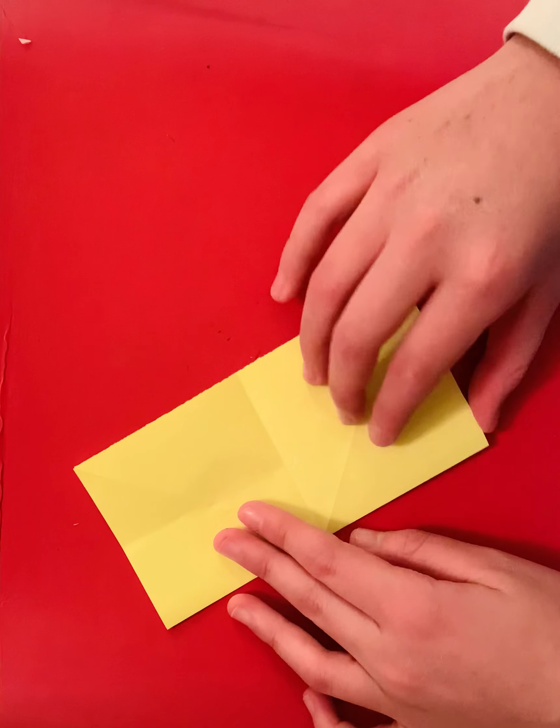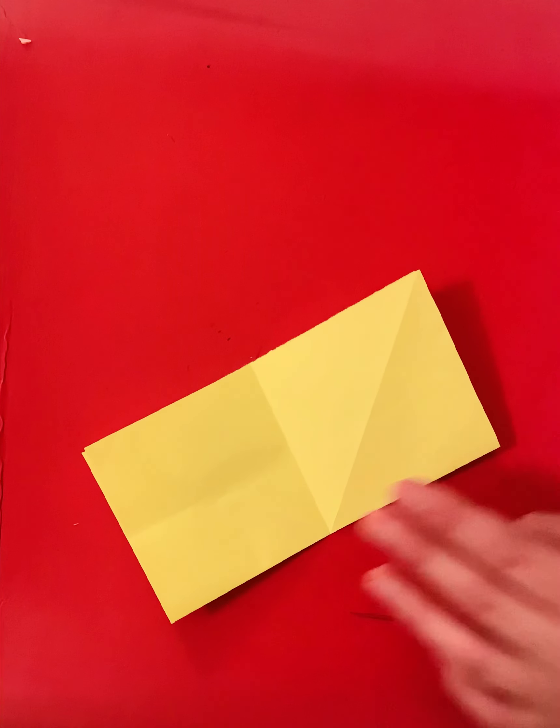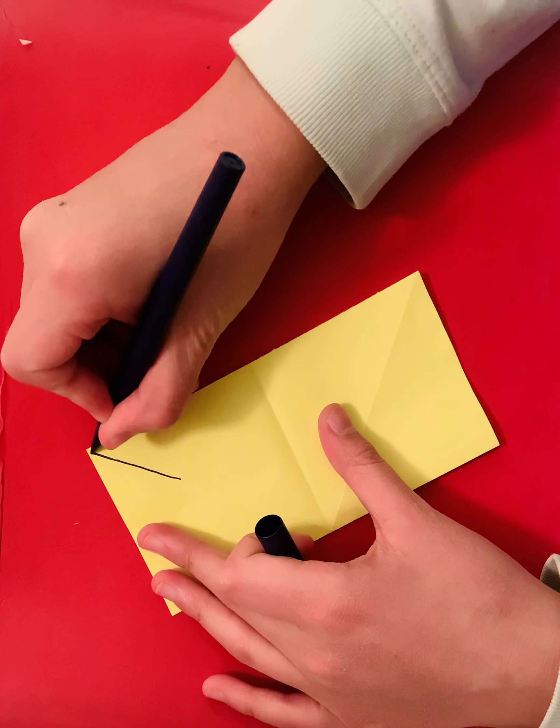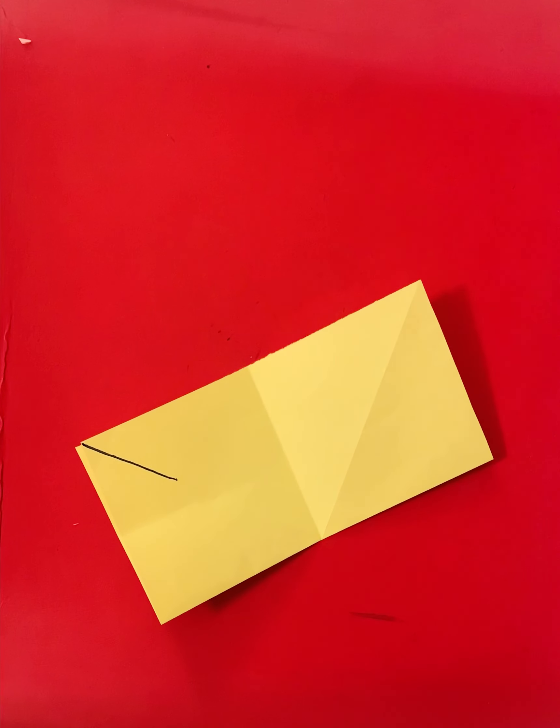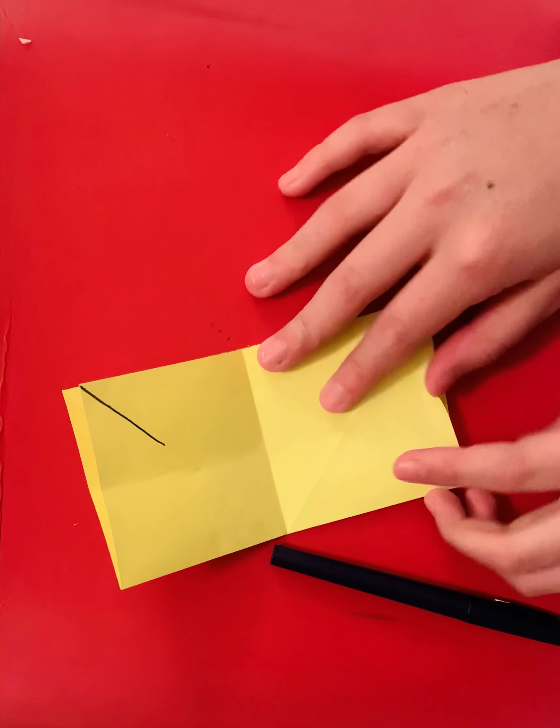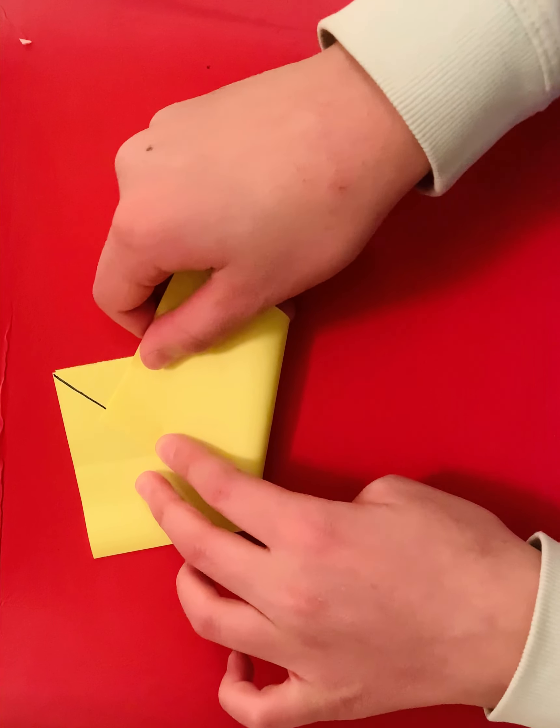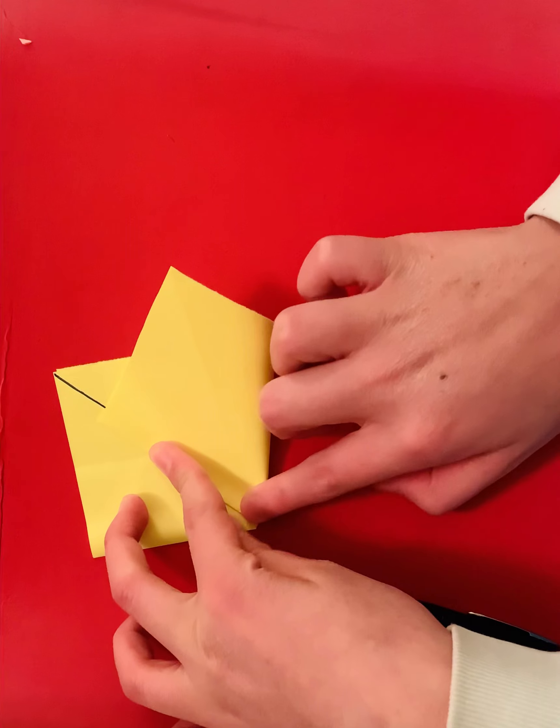And what we're going to do now is we are going to, let me draw a quick imaginary line here. Okay. So we are going to take this end right here and line it up to here. We're going to move it over just a little bit and then we're going to crease.